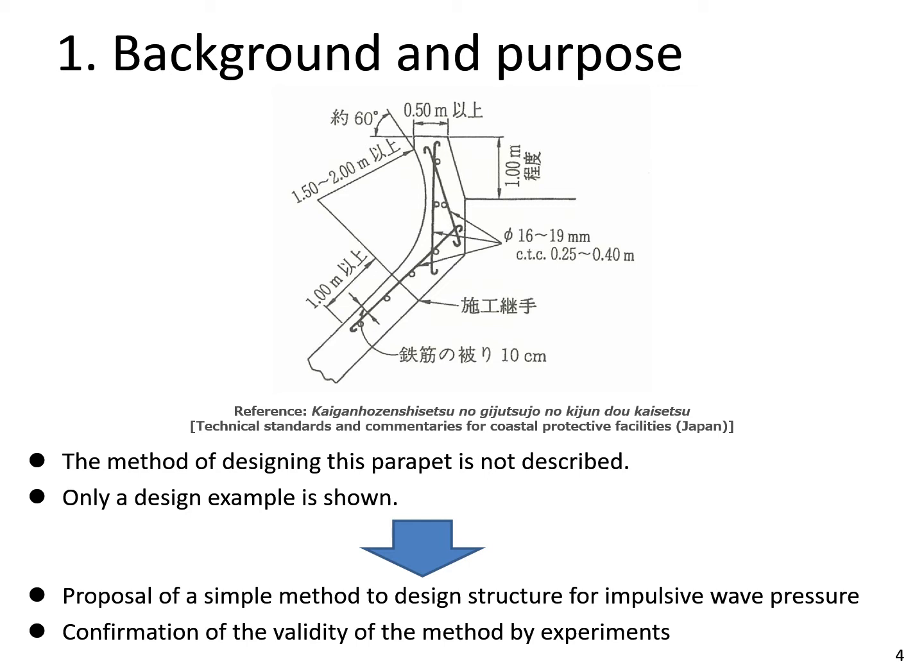For example, this figure is referred from the technical standards for Coastal Protective Facilities in Japan, but how to design this parapet is not described, only a design example is shown. So in this study, we propose a simple method to design structure for impulsive wave pressure and confirm the validity of the method by large-scale experiments.